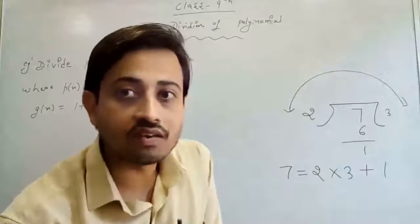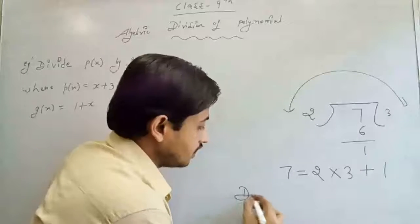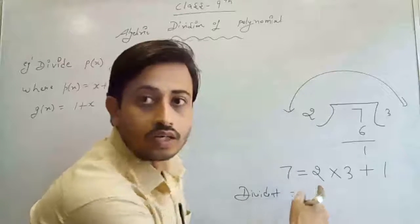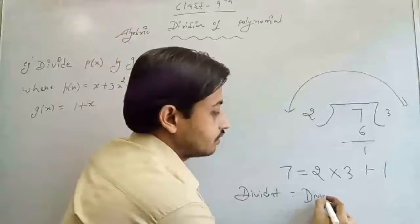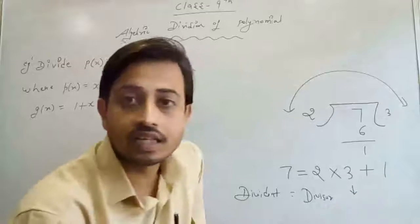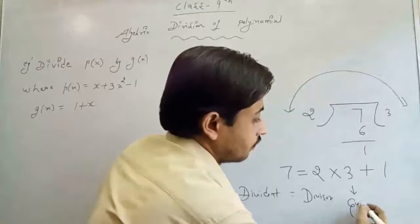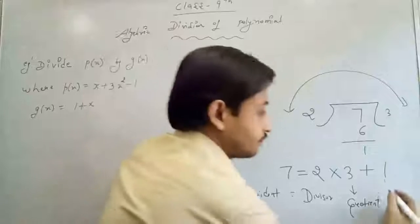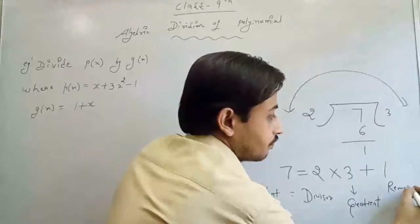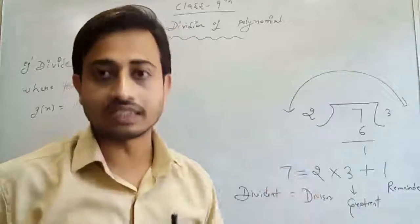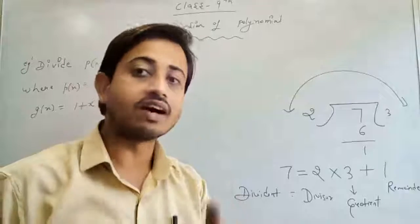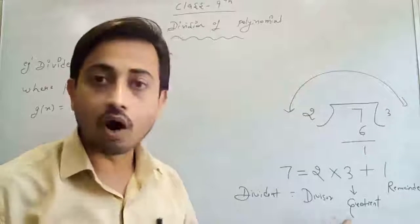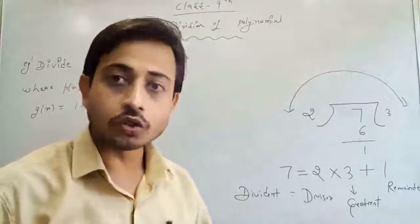What is 7? It is the dividend. What is 2? 2 is the divisor. What is 3? 3 is the quotient. And what is 1? 1 is the remainder. So according to this, we can write a number in terms of divisor, quotient, and remainder. The logic is: Dividend equals the product of divisor and quotient, plus remainder. This is the basic representation whenever we divide a number by another number.